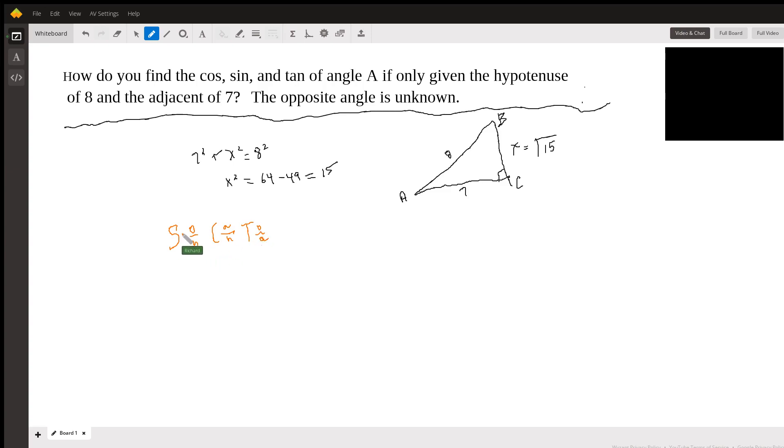And that's the sine is opposite over hypotenuse. Cosine is adjacent over hypotenuse. So now we can fill these in.